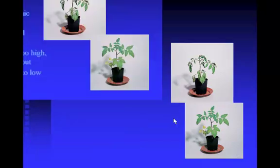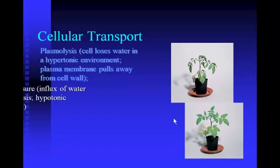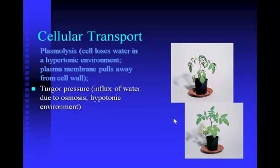Plasmolysis is what happens when a plant cell becomes dehydrated. When a plant cell is dehydrated, you can look at it under the microscope and see the cell membrane pulling away from the cell wall. Turgor pressure is what you have in a well-hydrated plant — the water pushes the cell membrane right up against the cell wall, and the cell membrane sometimes becomes indistinguishable from the cell wall.